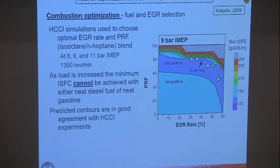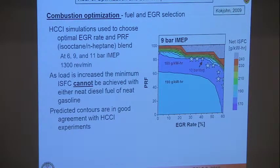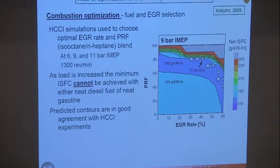We then did the same thing at different loads. At nine bar, for low EGR rates you could actually run with pure gasoline. However, there were regions where you'd have misfire — very late combustion — and regions of low pressure rise rates. Comparing to the six bar case, you needed more gasoline or higher PRF number fuel to get into the low pressure-rise-rate regime.